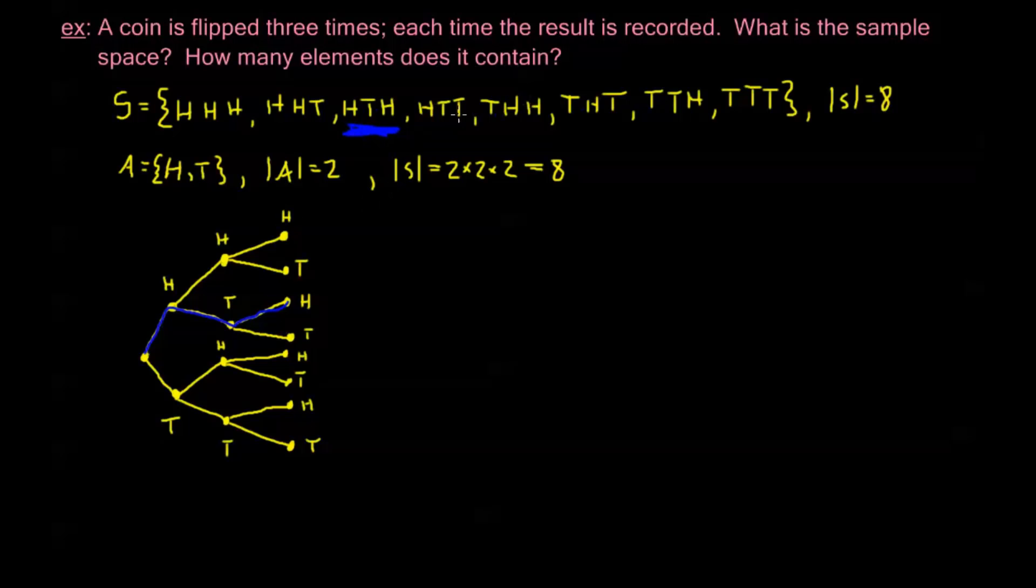Now, every single one of the sample points in my sample space is represented along one of these paths, one of the possible paths, and every possible path is exactly one of the points in the sample space, represented only once on the tree diagram. So this is what the tree diagram is.